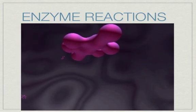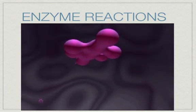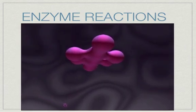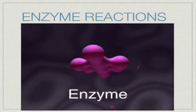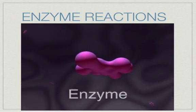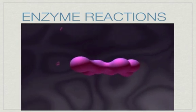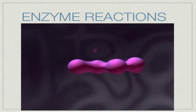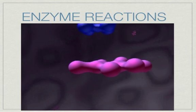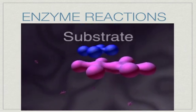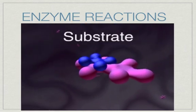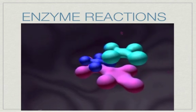Enzymes enable molecules called substrates to undergo a chemical change to form new substances called products. Each enzyme acts on a specific molecule or set of molecules called substrates. Each substrate fits into an area of the enzyme called the active site. This fitting together is often compared to a lock and key mechanism.